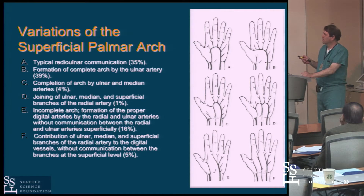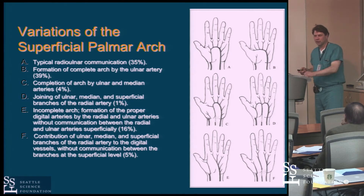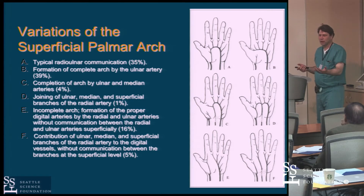There are further variations — there's a variation where you have a median artery. Initially when the arm forms there's actually one artery, and eventually this typically regresses, but not always. These are important to know about because as you start looking at the forearm you might see these variations, particularly if you're doing an angiogram in the hand.